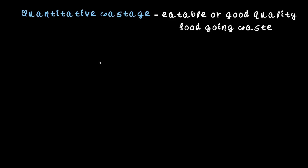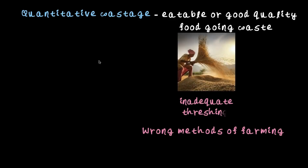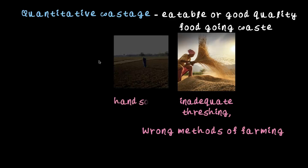This happens majorly because of wrong farming practices or wrong methods of farming. For example, if you do inadequate threshing, some of the seeds will remain with the husk. You will not be able to extract the whole seeds or grains if the threshing is inadequate — there goes good quality grain that cannot be retrieved.